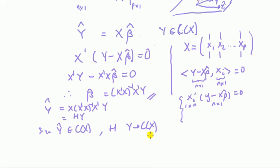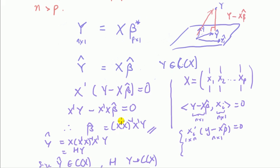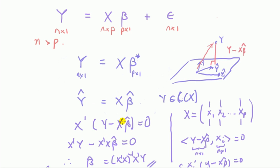And so we've answered the question and explained why H is a projection matrix into the column space of X.